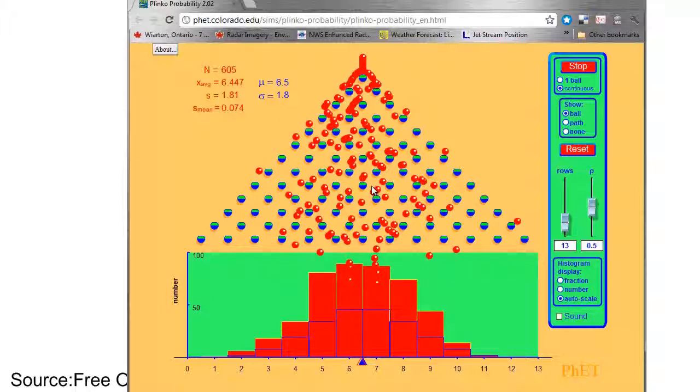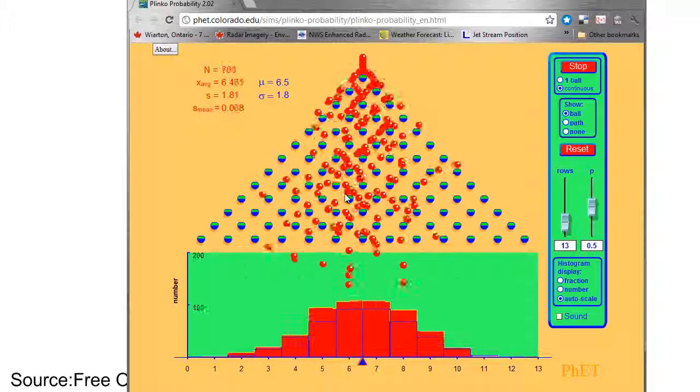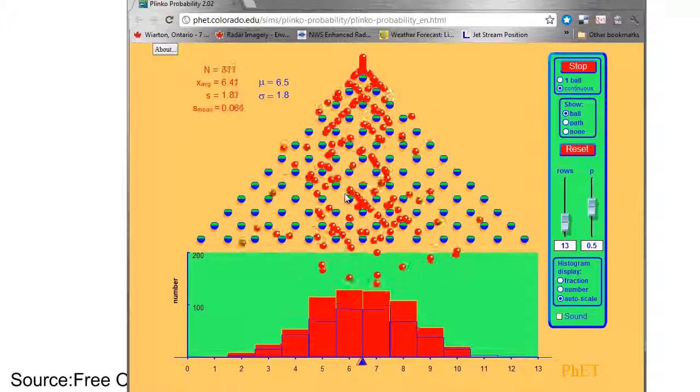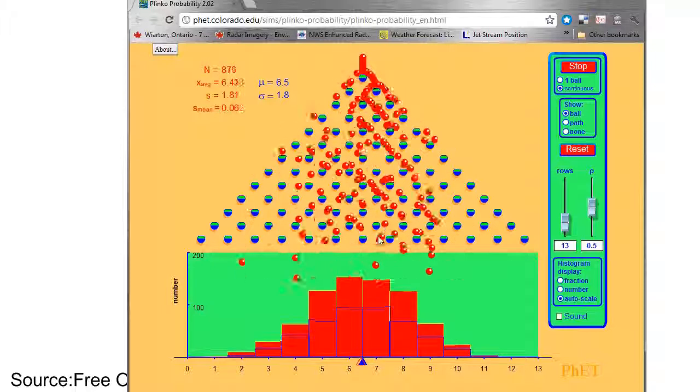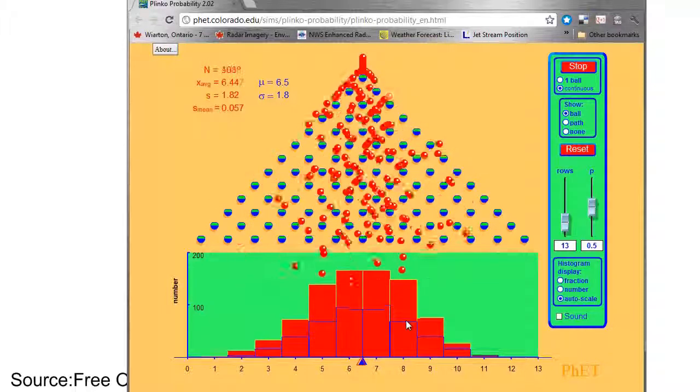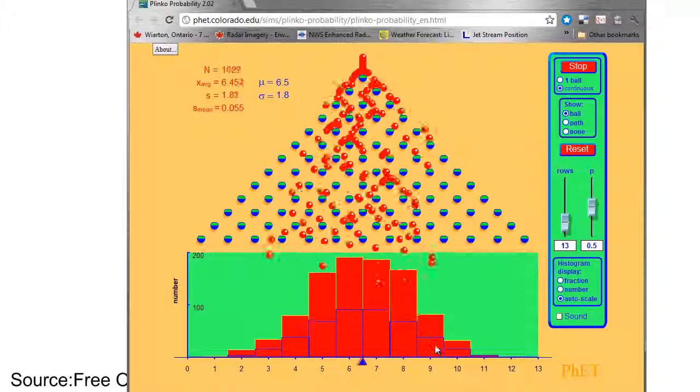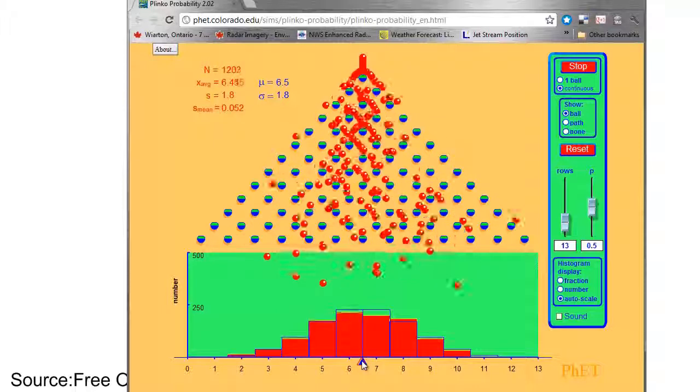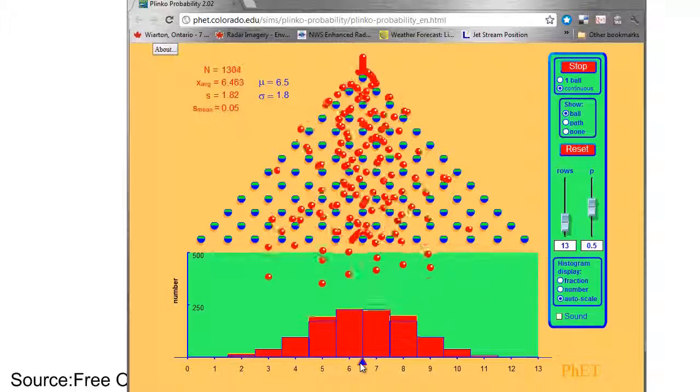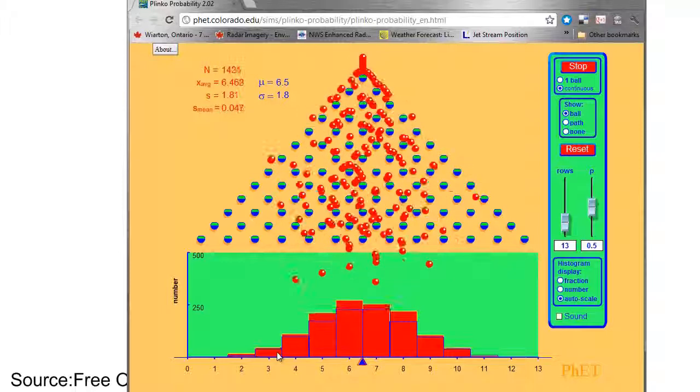And so interestingly, even though this is all about binomial probabilities, in other words you can either go right or left, we still end up after several trials with this sort of binomial distribution with things clustered around an average, and of course fewer and fewer things happening at the tail.